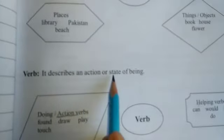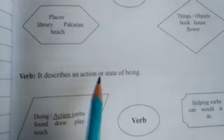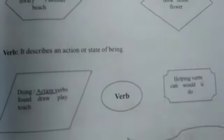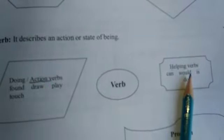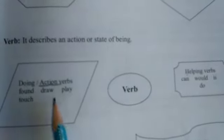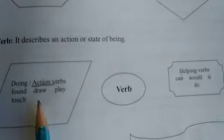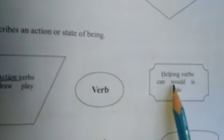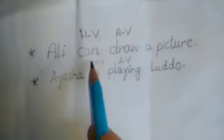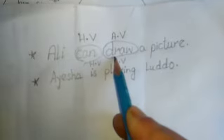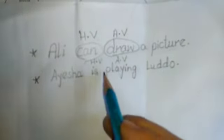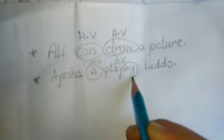Now move towards the verb. It describes an action or state of being. A verb is a word which shows an action done by a subject. There are two categories of the verb: one is the action verb or doing verb, and the other is the helping verb. Action verbs actually perform an action in a sentence, and helping verbs help complete a sentence. Found, draw, play, touch, eat, sleep, etc. — these are examples of action verbs. And can, would, is, do — these are examples of helping verbs. Look at these sentences: 'Ali can draw a picture.' In this sentence, 'can' is the helping verb and 'draw' is the action verb. 'Aisha is playing Ludo.' In this sentence, 'is' is the helping verb and 'playing' is the action verb.